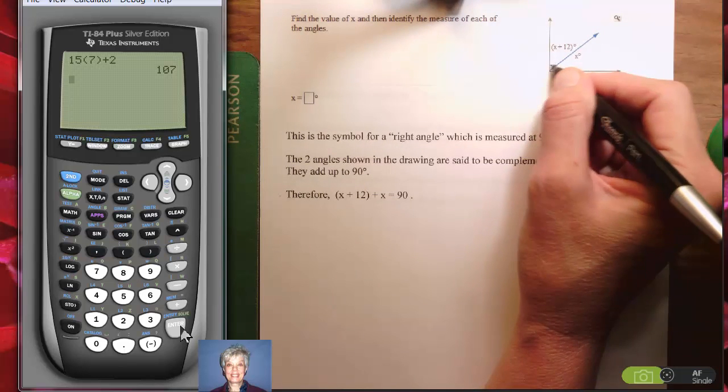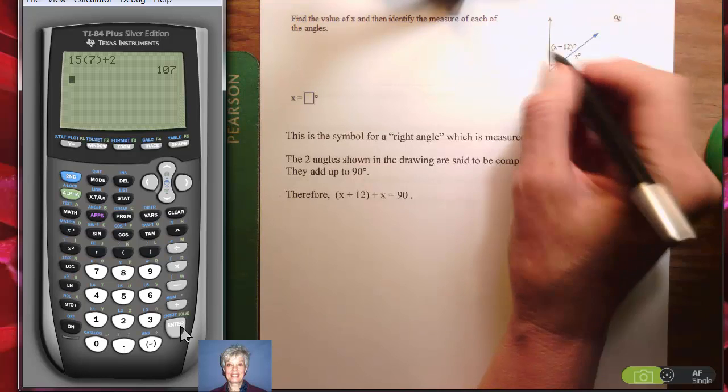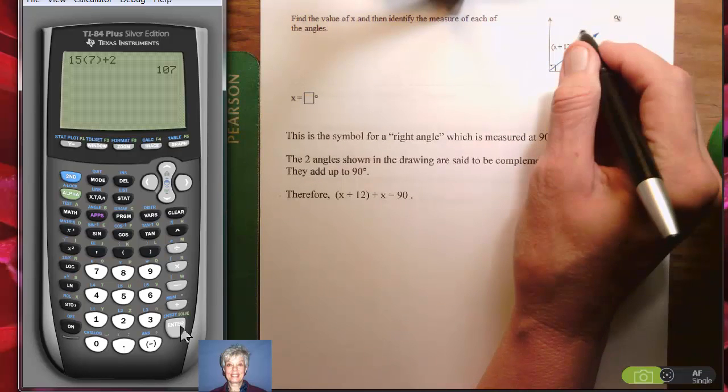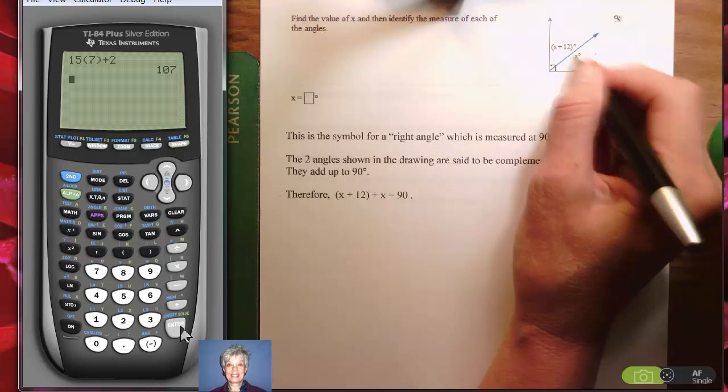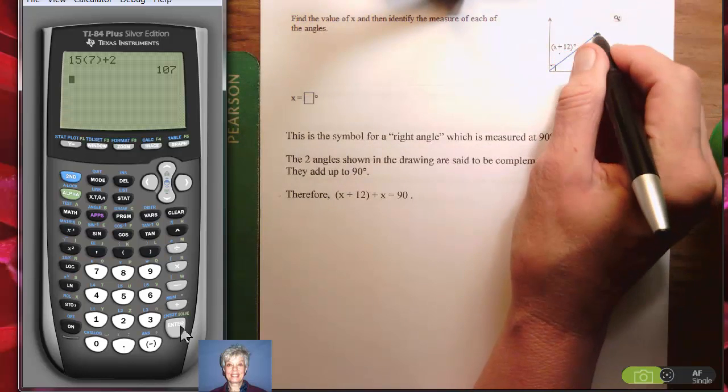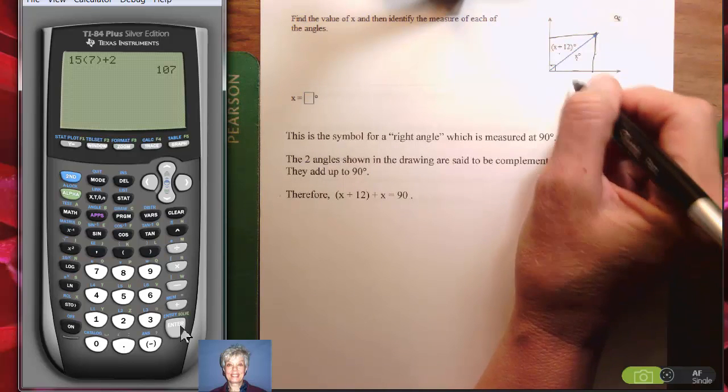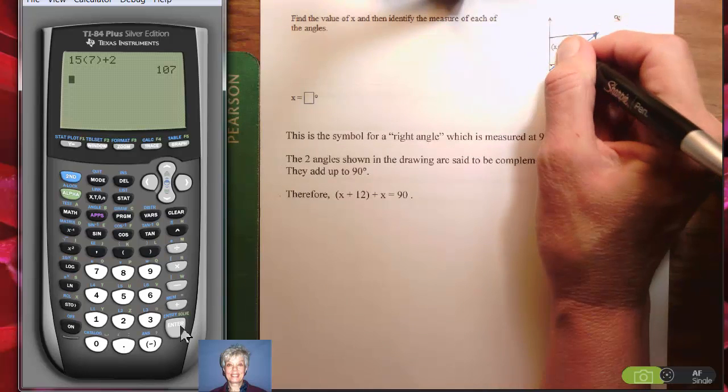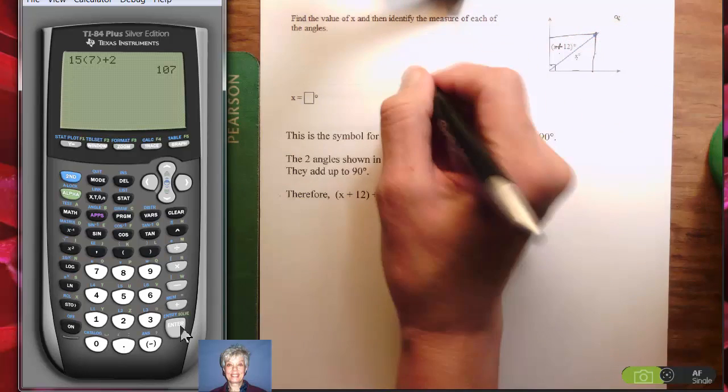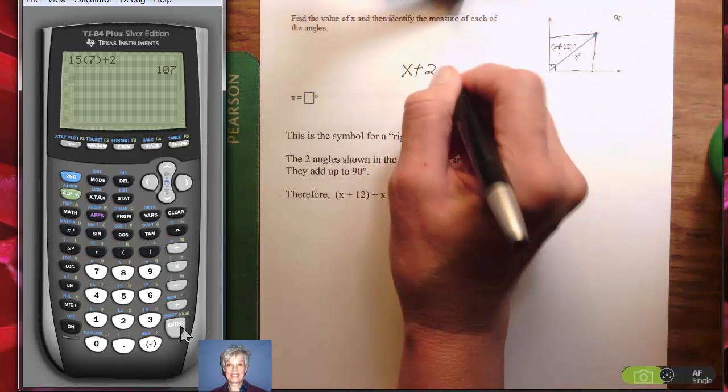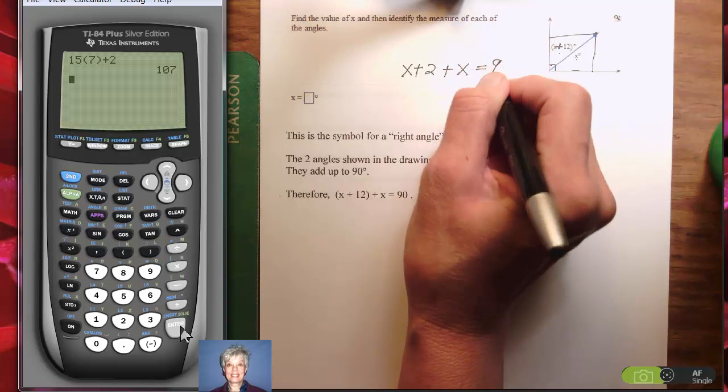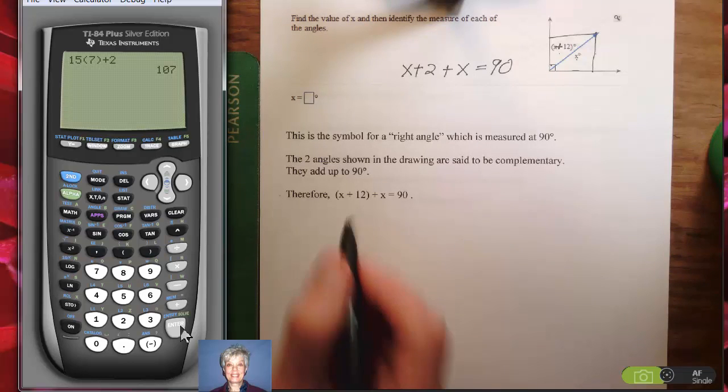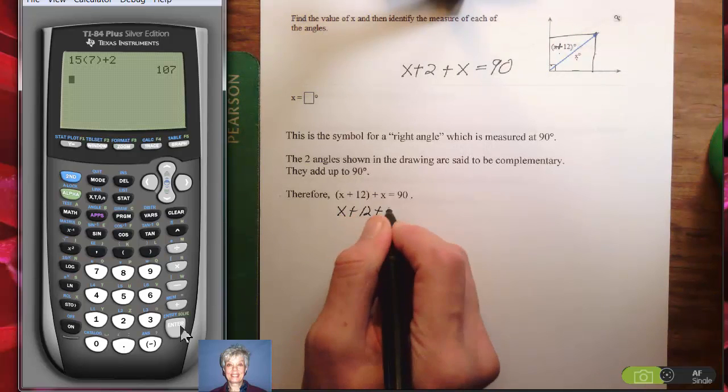This little box is the symbol for a 90 degree angle. What we're dealing with here is a 90 degree angle that's cut into two angles. These angles are called complementary because if you put them together, you get the 90 degree angle. So this angle plus this angle are going to add up to 90 degrees. I'm going to have x plus 12 plus x and they're going to equal 90 degrees.